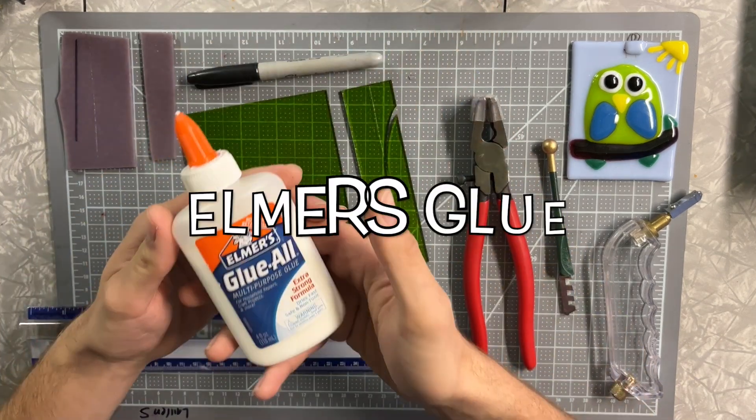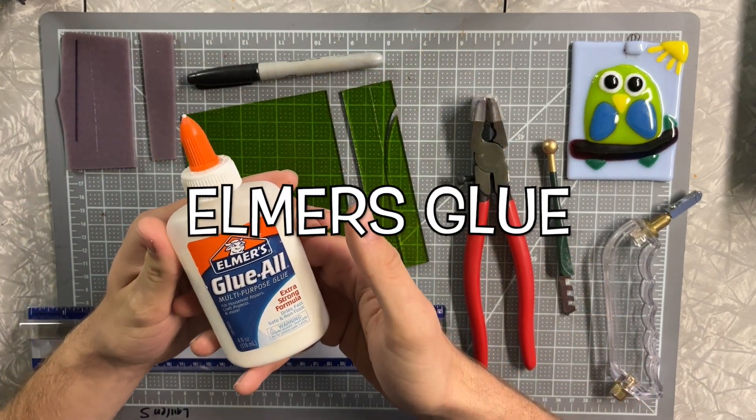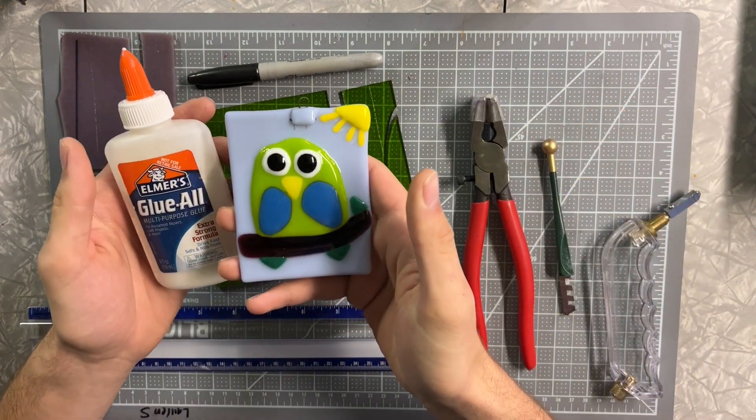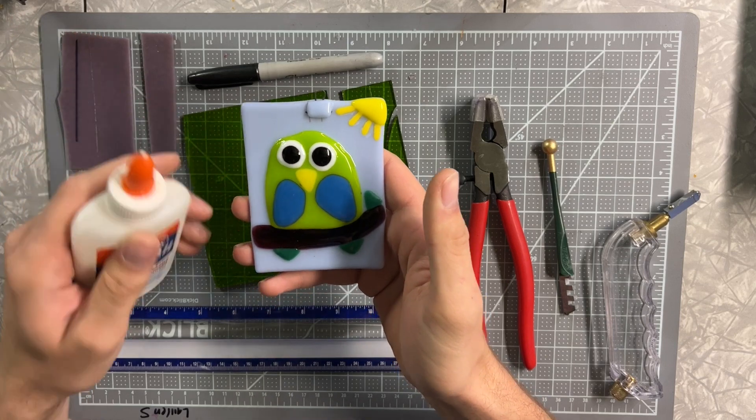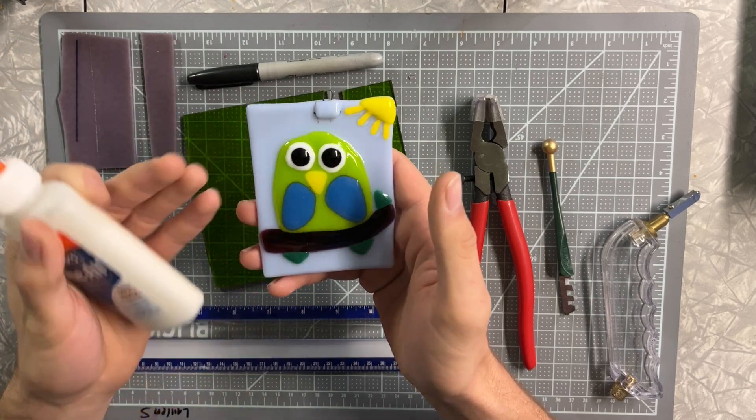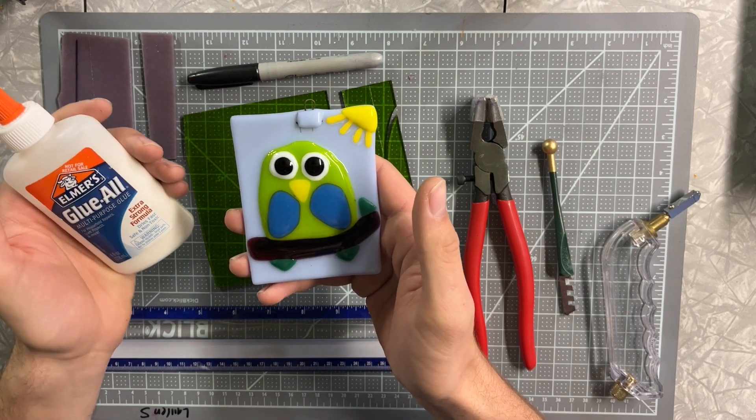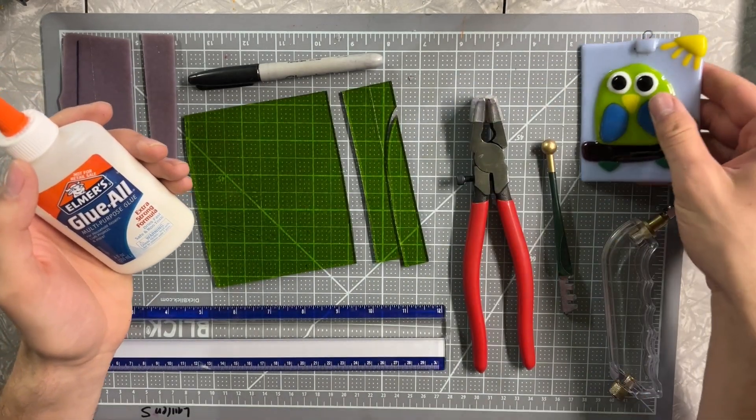And lastly, Elmer's glue works really good for bonding glass together. So after you cut out all your shapes and you want to make a bird, for example, using a little bit of Elmer's glue to bind the little pieces of glass together until they can melt in the kiln is going to be a lifesaver for you.